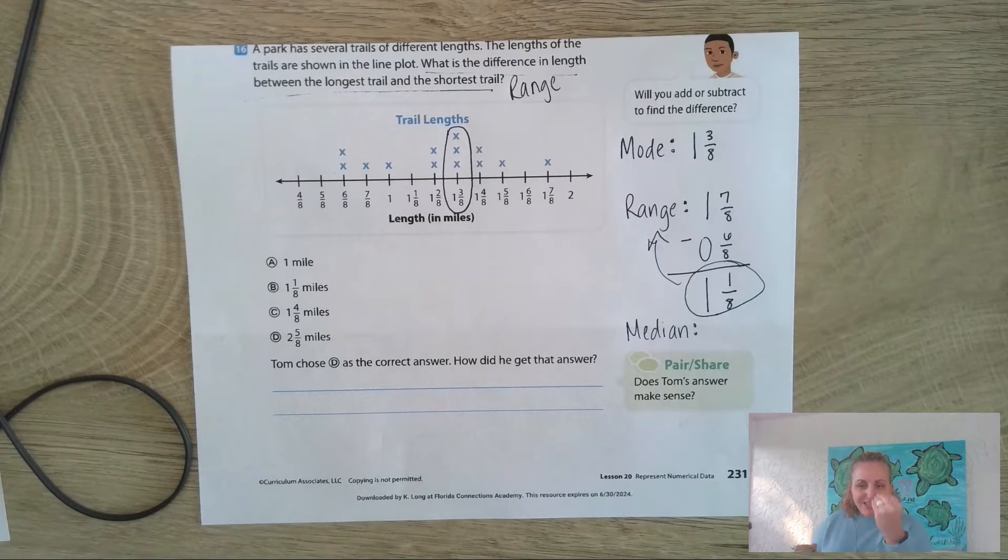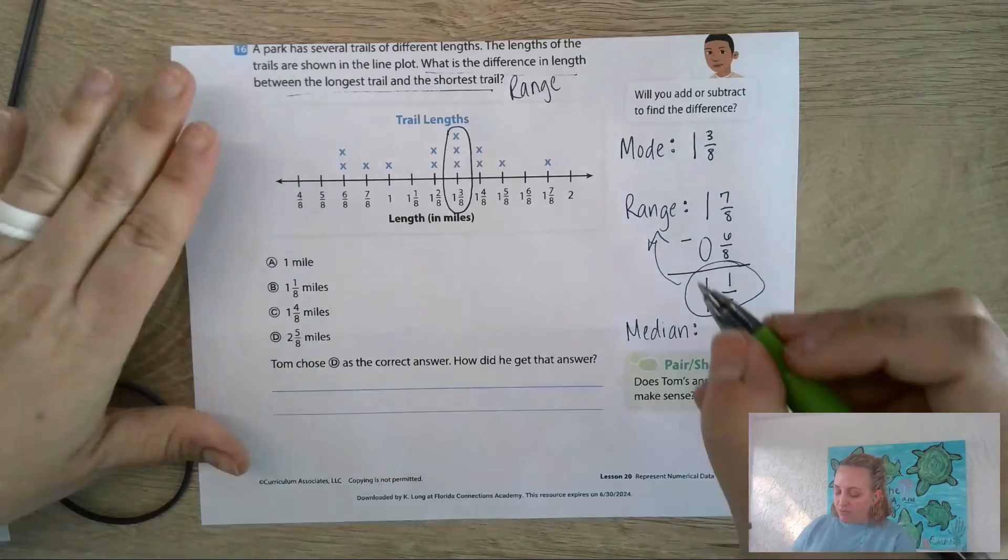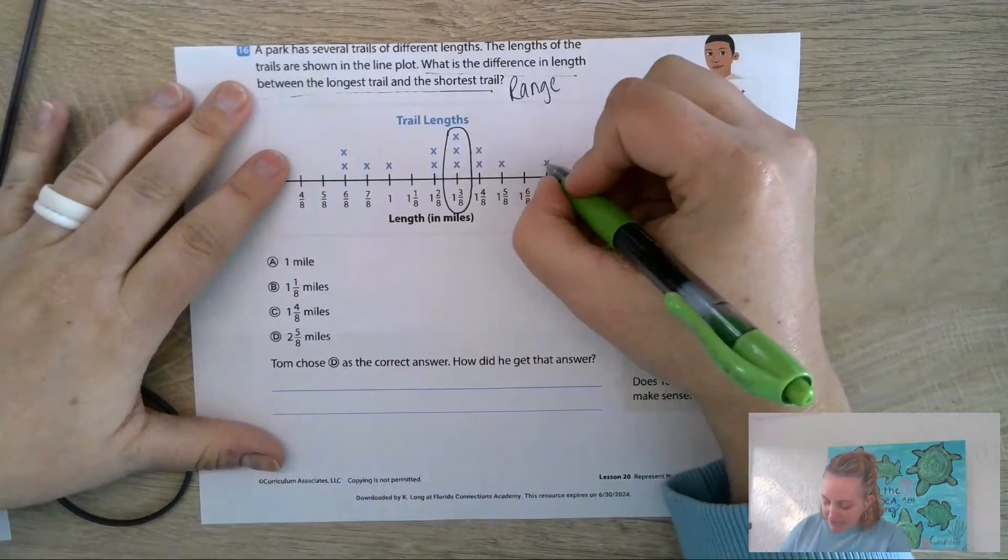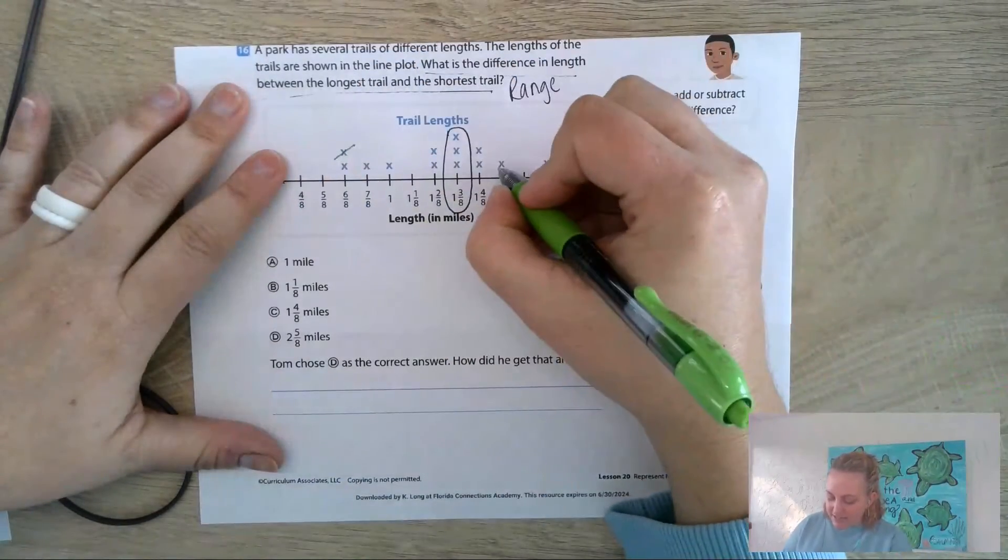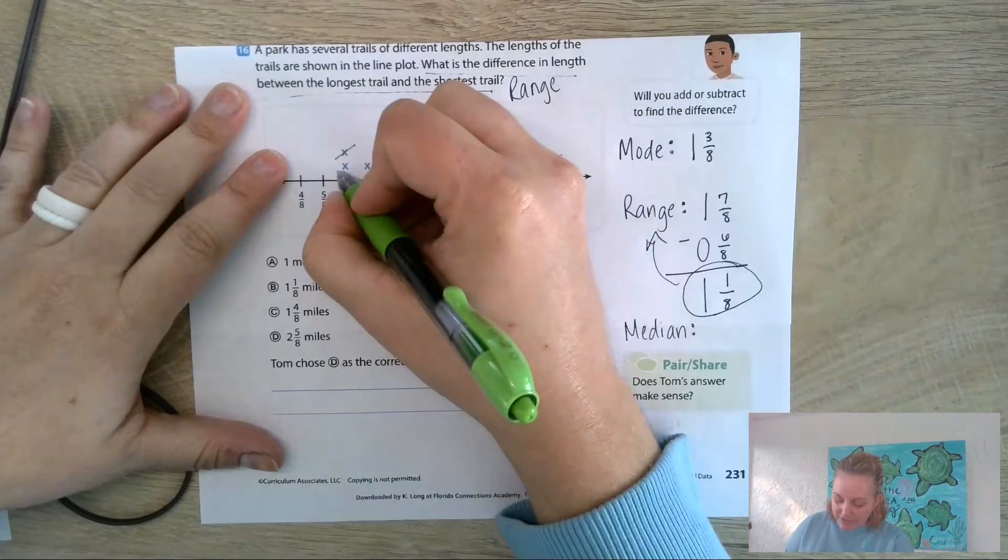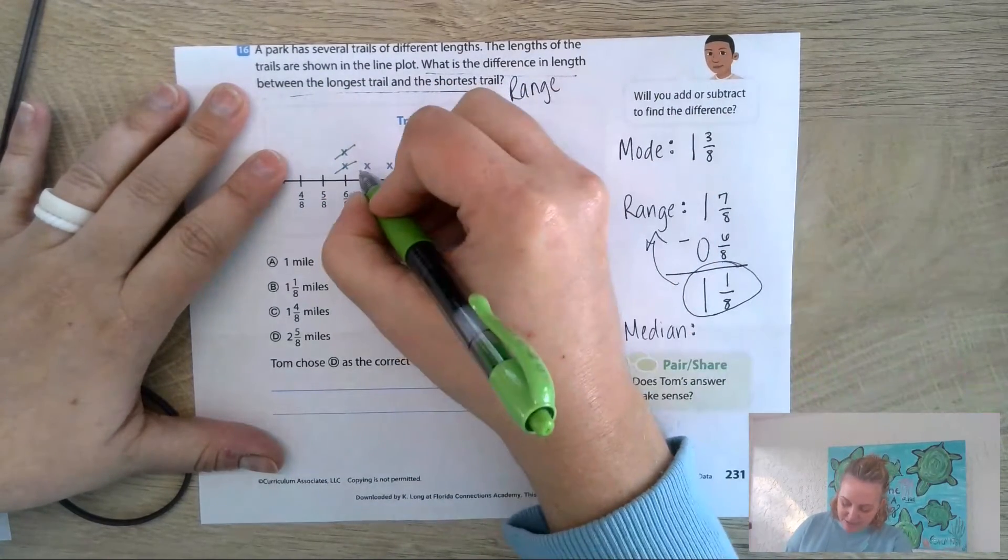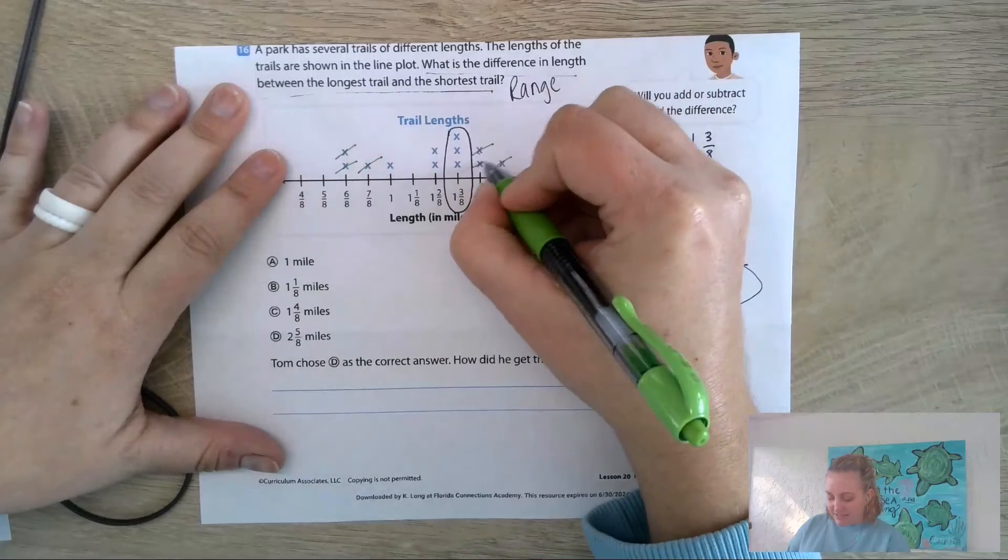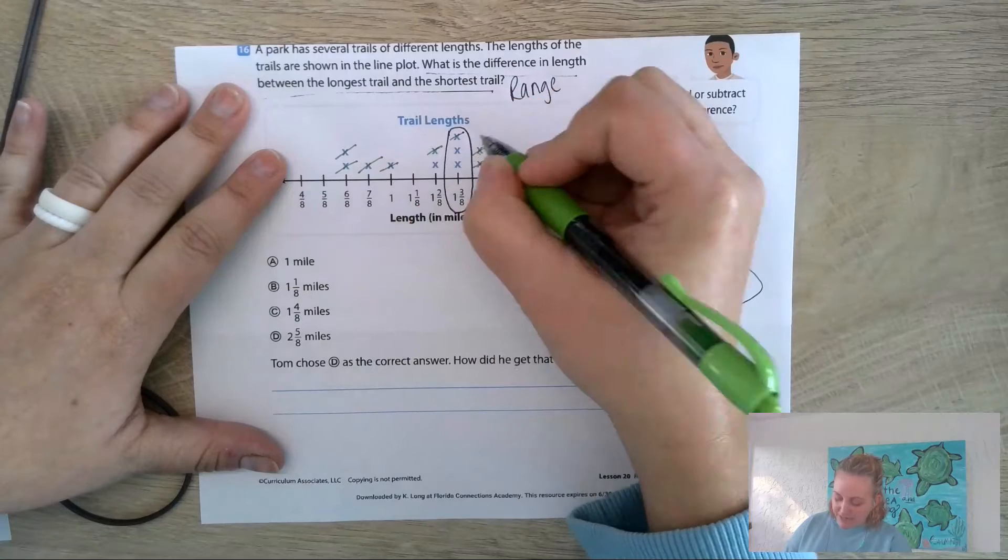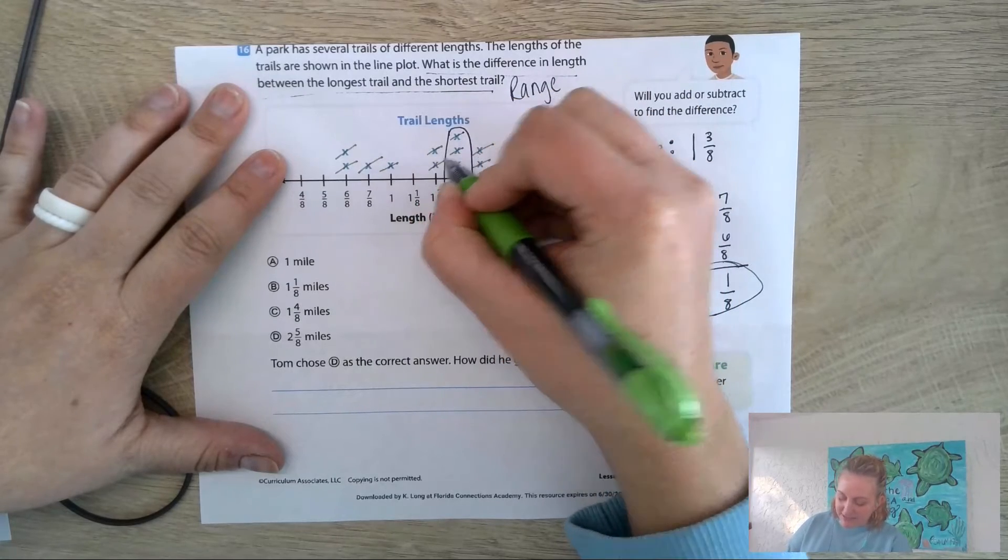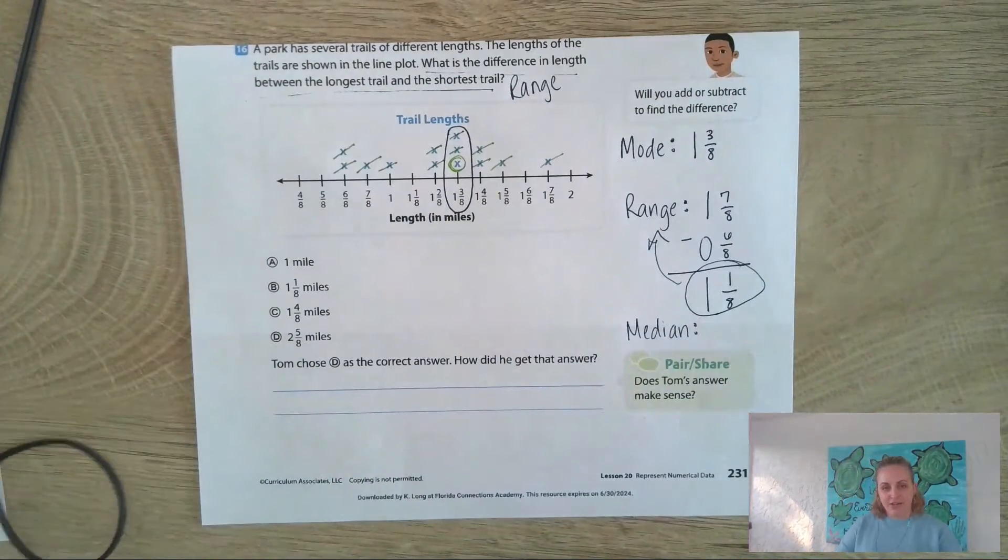We go to the biggest number, cross it off. Smallest number, cross it off. Next biggest, cross it off. Next smallest, cross it off. Next biggest, next smallest, next biggest, next smallest, next biggest, next smallest, next biggest, next smallest, and there is our median.